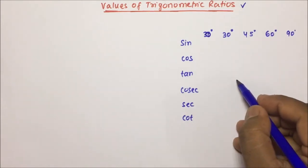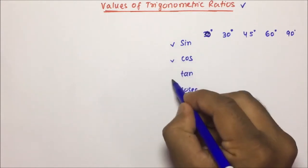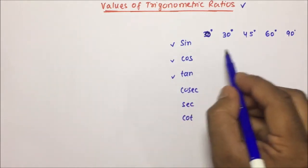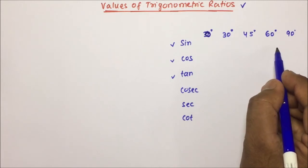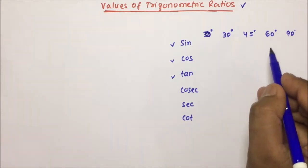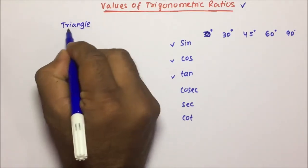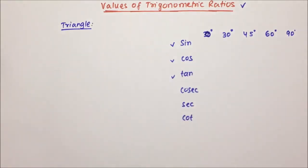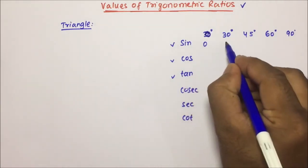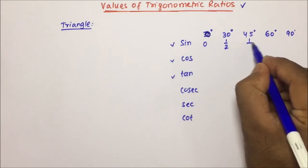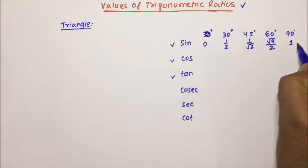Basically for solving the questions of trigonometry, the minimum requirement is you should know the values of sin, cos, and tan. So sin 0 will be 0, sin 30 will be 1/2, sin 45 will be 1/√2, sin 60 will be √3/2, and sin 90 will be 1.